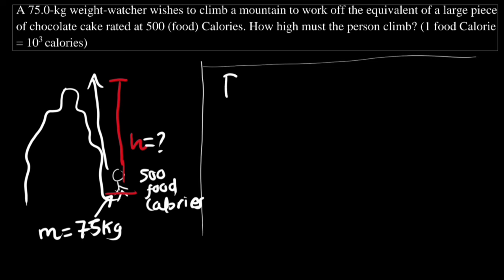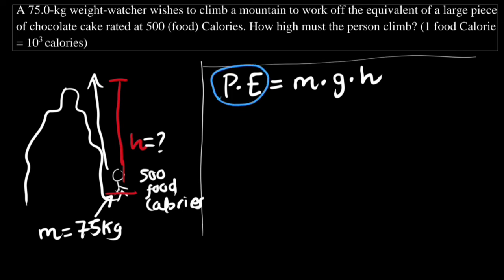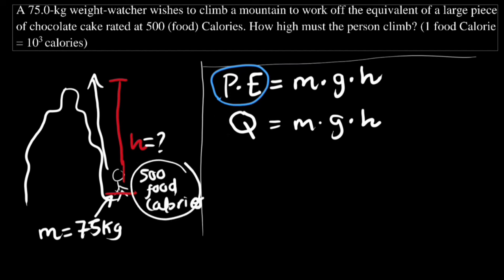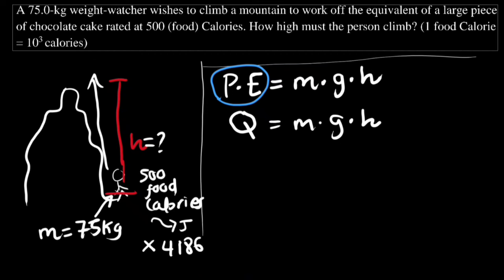The energy here is potential energy: Q = mgh. We need the energy in joules, so we multiply 500 food calories by 4186 joules per food calorie, giving 500 × 4186 = 2,093,000 joules.